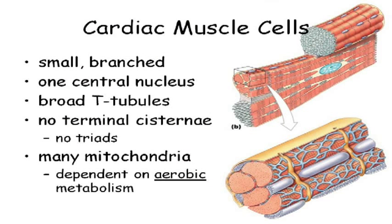Unlike skeletal muscle cells, cardiac muscle cells do not do anaerobic metabolism very well. No oxygen to the cardiac muscle cells, they die. They have lots and lots of myoglobin, lots and lots of mitochondria — they need that oxygen. That's why the heart is red.